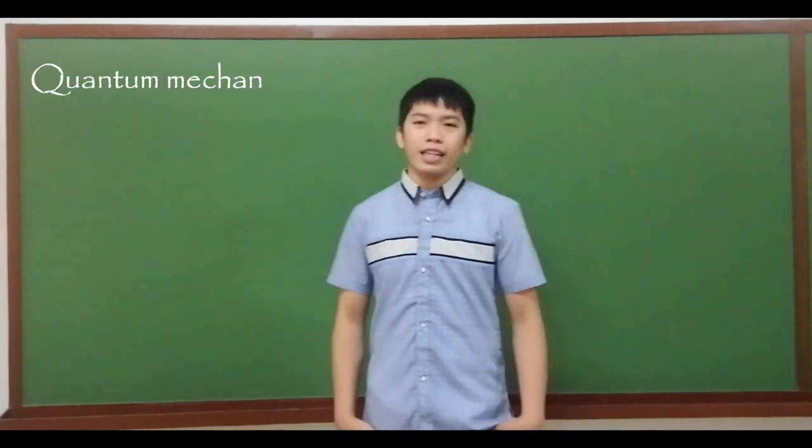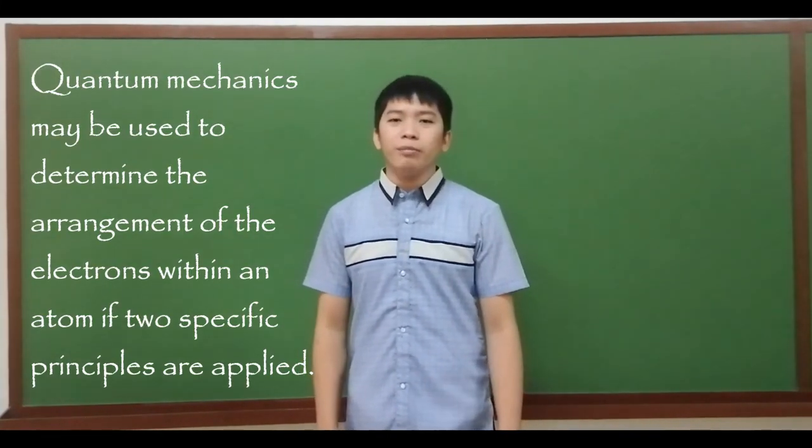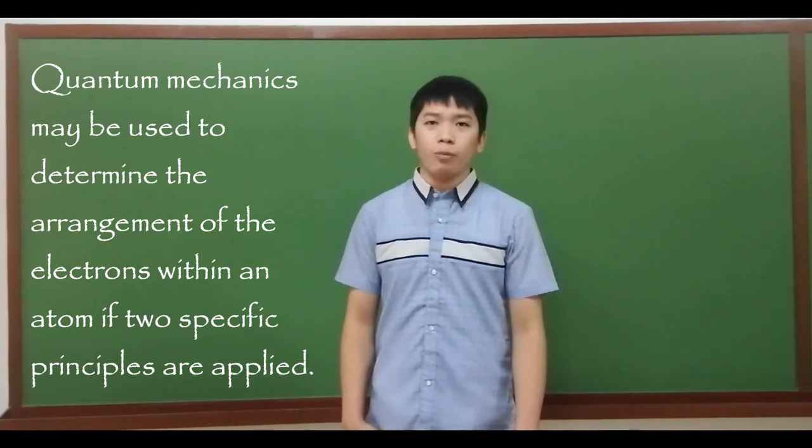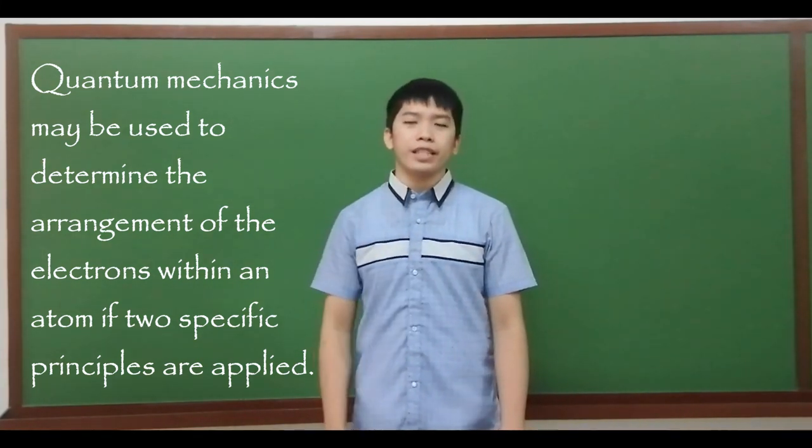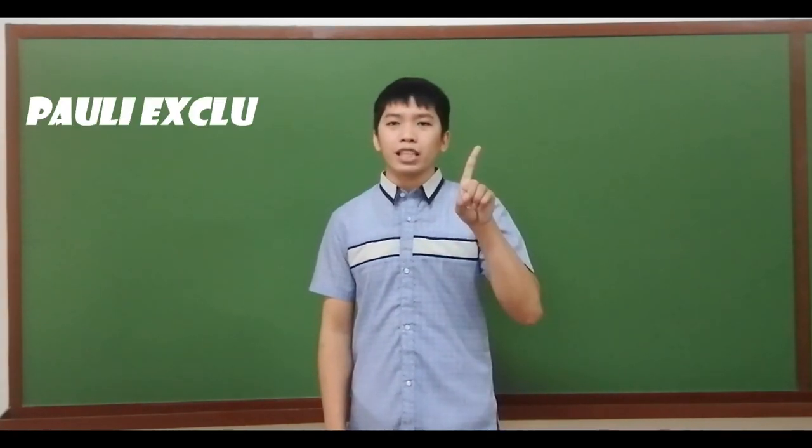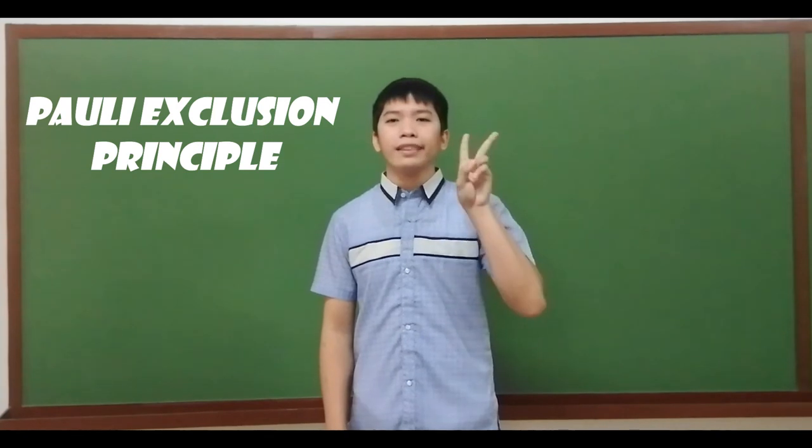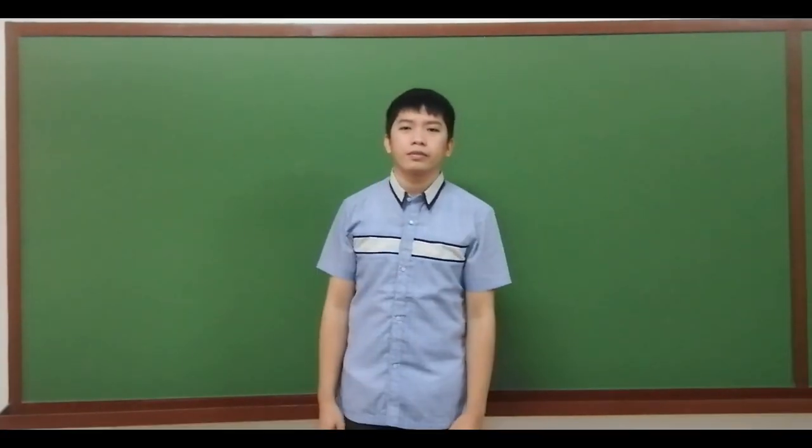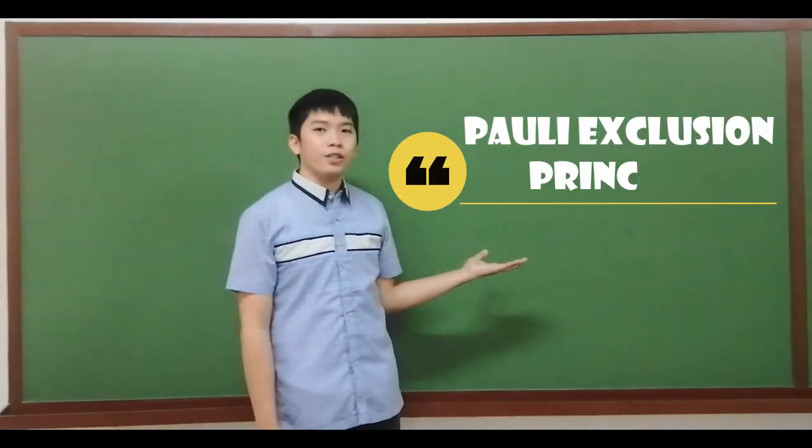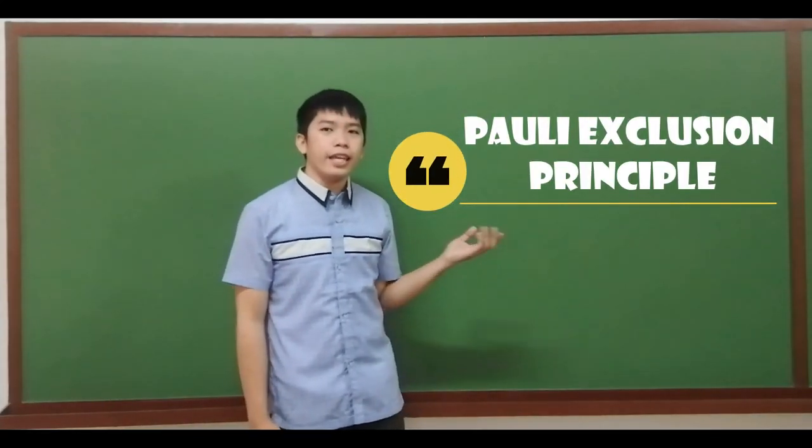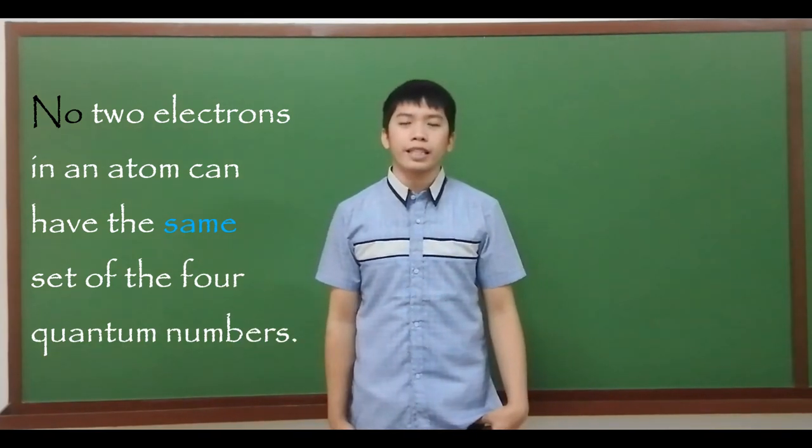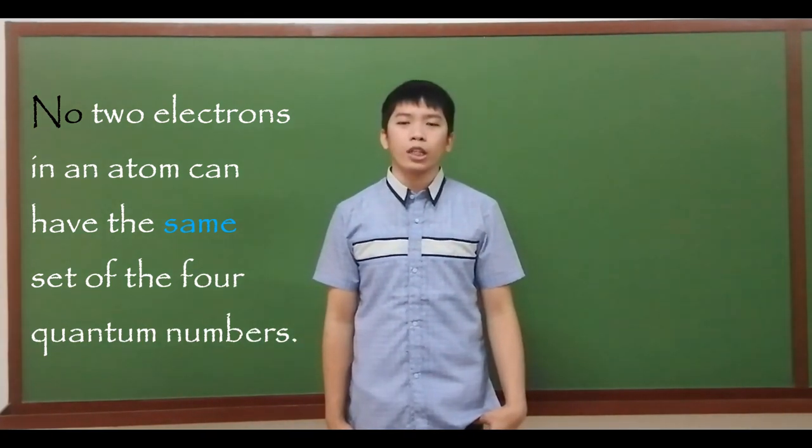Let us now discuss the electron configuration. Quantum mechanics can be used to determine the arrangement of the electrons within an atom if two specific principles are applied. The Pauli exclusion principle and the Aufbau principle. The Pauli exclusion principle states that no two electrons in an atom can have the same set of the four quantum numbers.